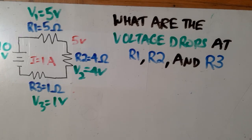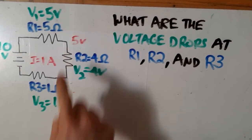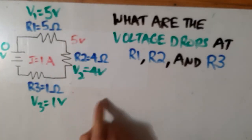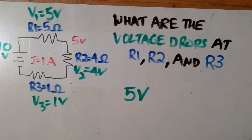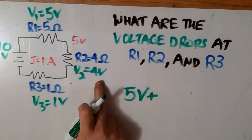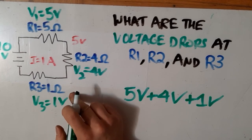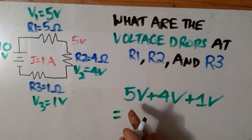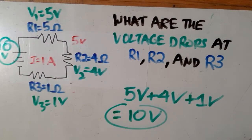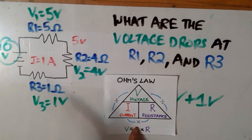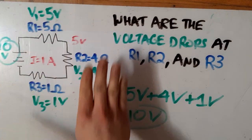Now, if you were paying attention earlier, we talked about how with Kirchhoff's voltage law we can add up all the voltage drops, and they should equal the total voltage. So let's double check: 5 volts plus 4 volts plus 1 volt equals 10 volts — and that's correct because we had 10 volts to begin with. Thanks for watching. I hope this video gave you a little more confidence as we apply Ohm's Law to more complicated series circuits.